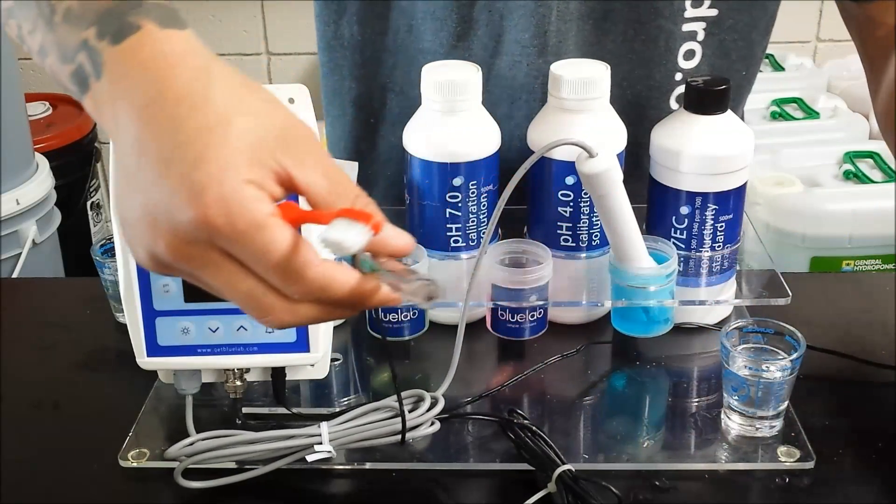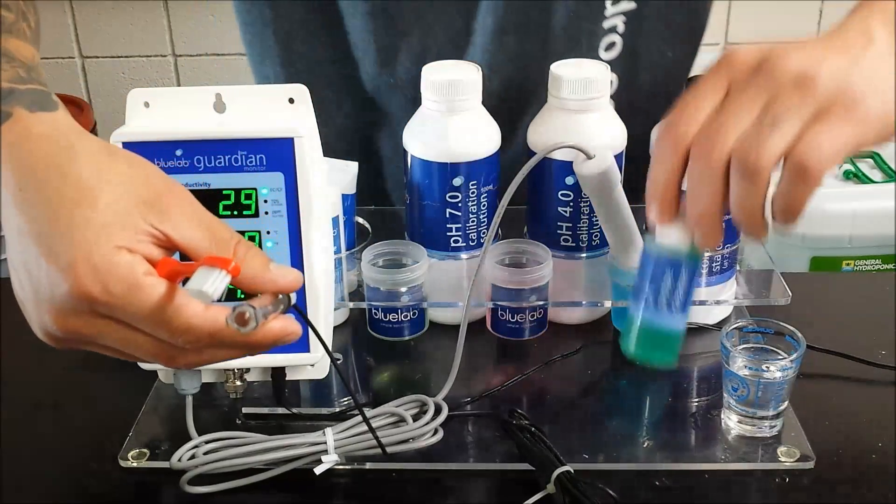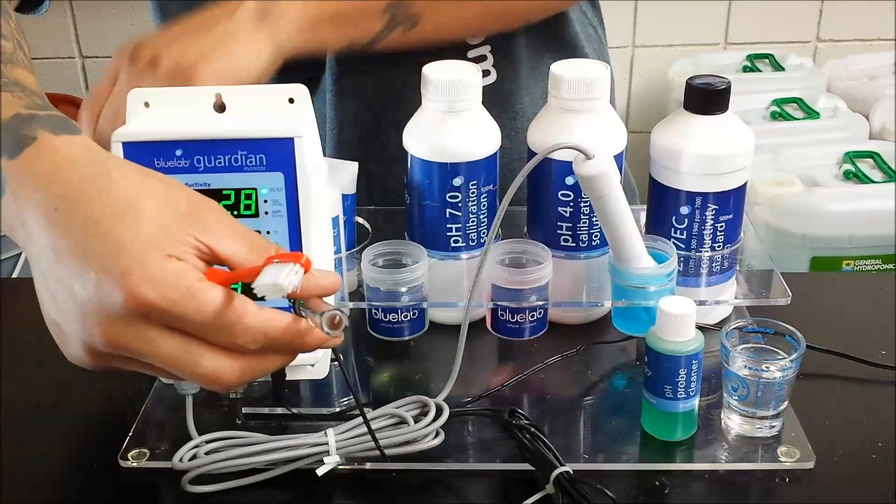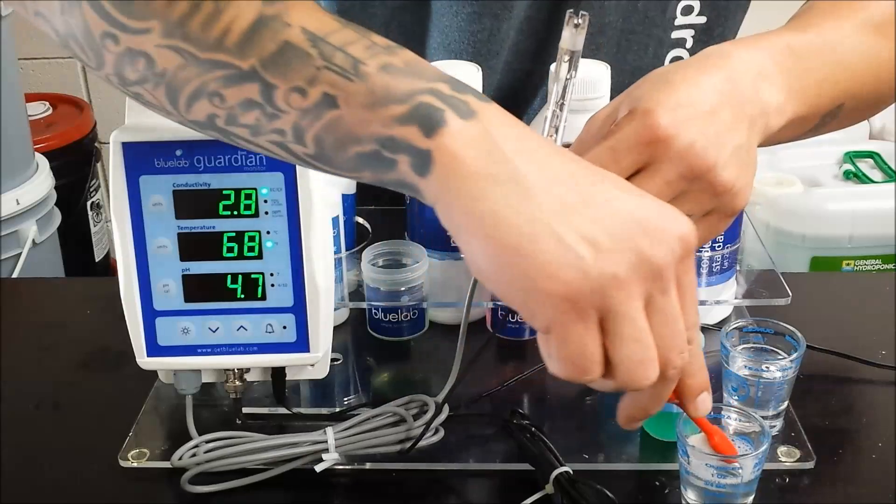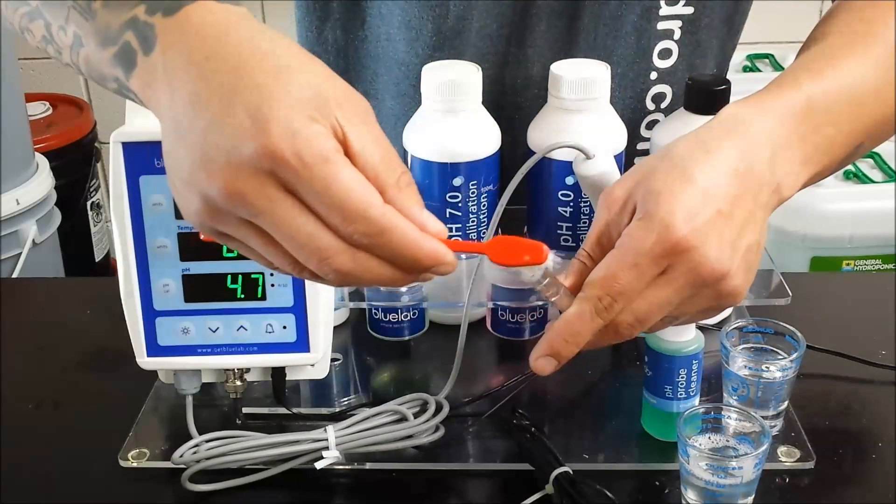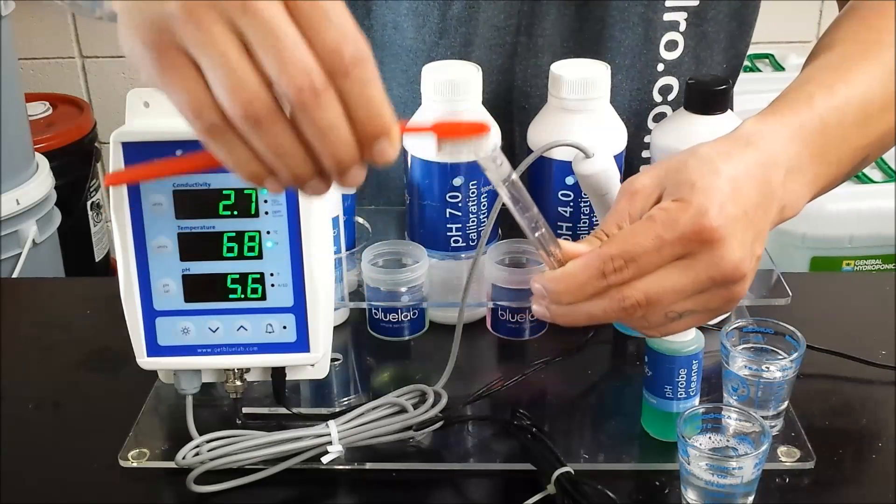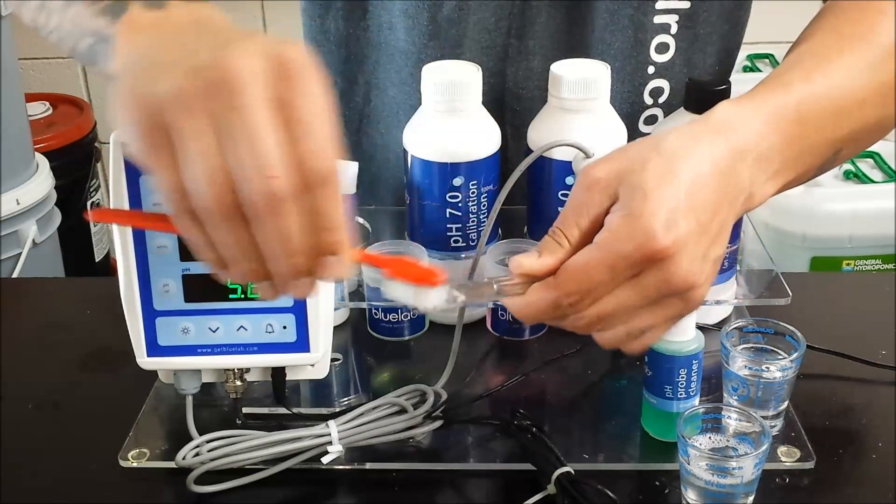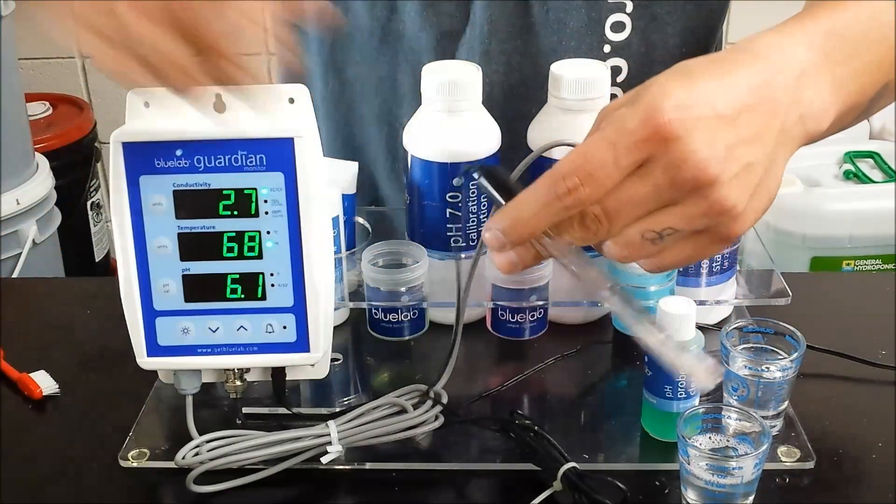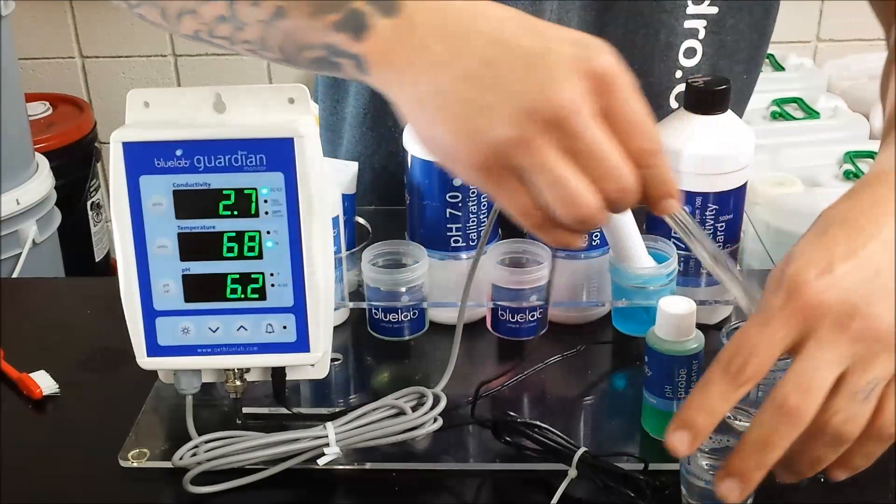And cleaning our pH probe here we have the Bluelab pH probe cleaner, again mixed with some water. Toothbrush. Go ahead and twist it around, scrub in there. You want to be nice and clean. Rinse in some water.